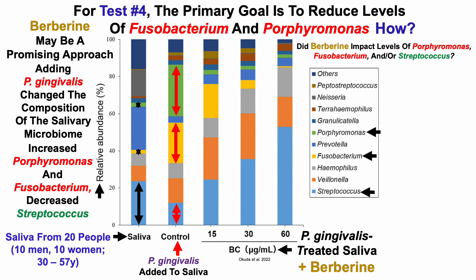So what does this have to do with berberine? BC stands for berberine chloride, and the last three columns — 15, 30, and 60 — are low, medium, and high concentrations added to the P. gingivalis-spiked saliva. First, berberine had a big impact on reducing levels of Porphyromonas — the green went back down to where it was in the original saliva, even though these samples were spiked with P. gingivalis. In the presence of berberine, P. gingivalis clearly isn't able to grow. Second, at the highest concentration of berberine, Fusobacterium was almost completely absent — it was almost completely eliminated.